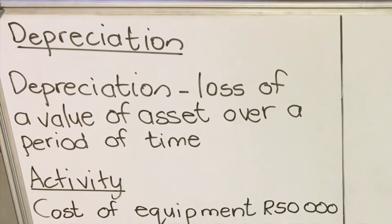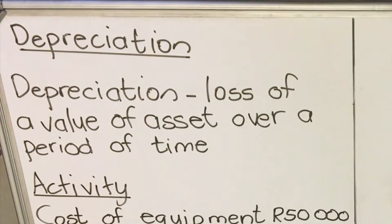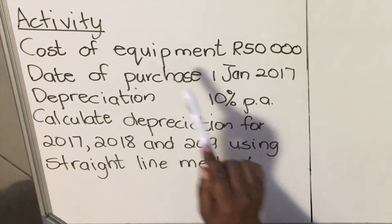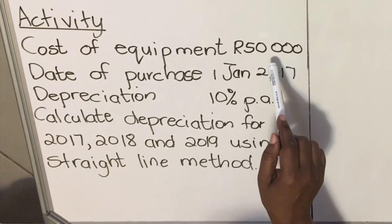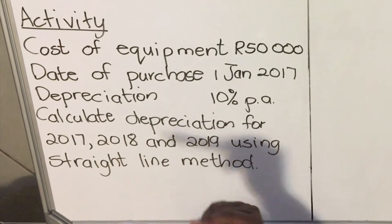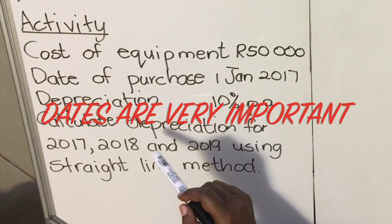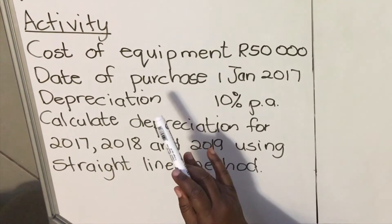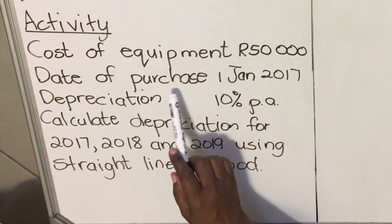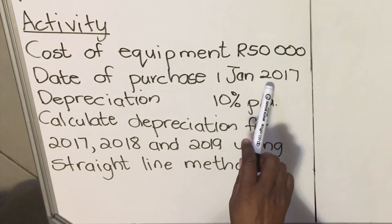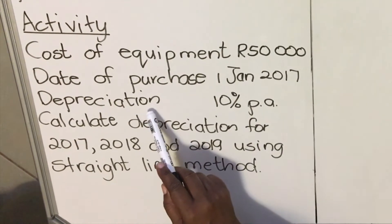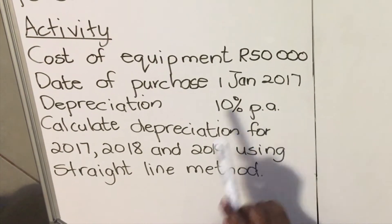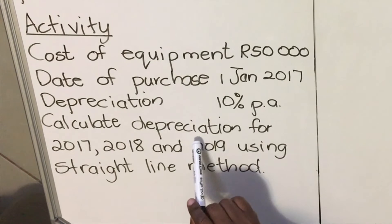Let's start with our activity. The cost of equipment is fifty thousand. In accounting, dates are very important — you need to look at when the asset was purchased so you know how many months to calculate. The date of purchase is 1 January 2017, and the depreciation percentage is 10 percent per annum.